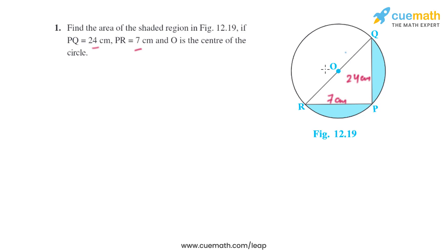To find the area of the shaded region, we can see that RQ is the diameter of the circle, which means this is a semicircle. So we can find the area of the semicircle and the area of triangle RQP, and then subtract them to get the area of the shaded region.